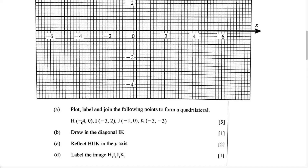Remember, any time we're dealing with points, we're going to have two coordinates. We're going to have an X coordinate, which is the first number, and a Y coordinate, which is the second number. The X axis is the horizontal line, and the Y axis is the vertical line. So let's start to plot these points.